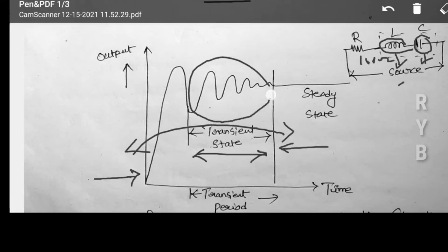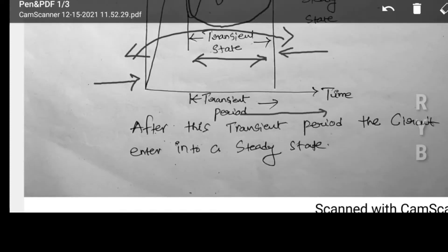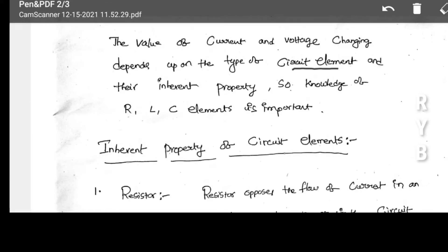The transient analysis of an RL circuit: after the transient period it will return to steady state. Between two steady states, a transient state is present — not only in circuit elements but in systems also. The value of current or voltages applied to any circuit depends on the type of circuit element and its properties. Before knowing transient analysis, we must know how the resistor, inductor, and capacitor each behave.